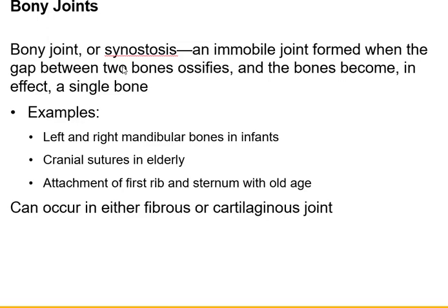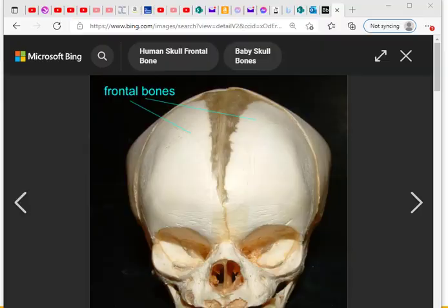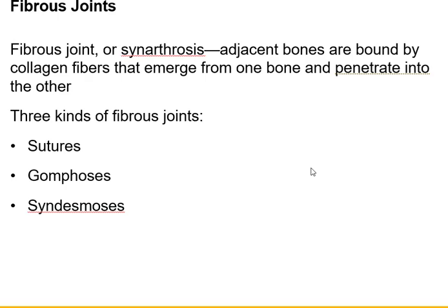Other examples where bone joins with bone to become one continuous bone include the cranial sutures in older people, the first rib and the sternum fusing together in old age, and the left and right mandibular bones in a newborn infant. Here is an infant skull showing the fontanelle where the bones have not fused, and you can see where these bones don't have clearly defined sutures yet.